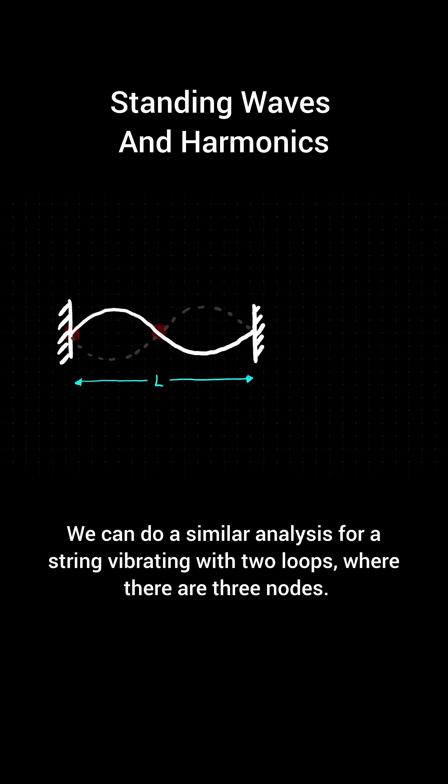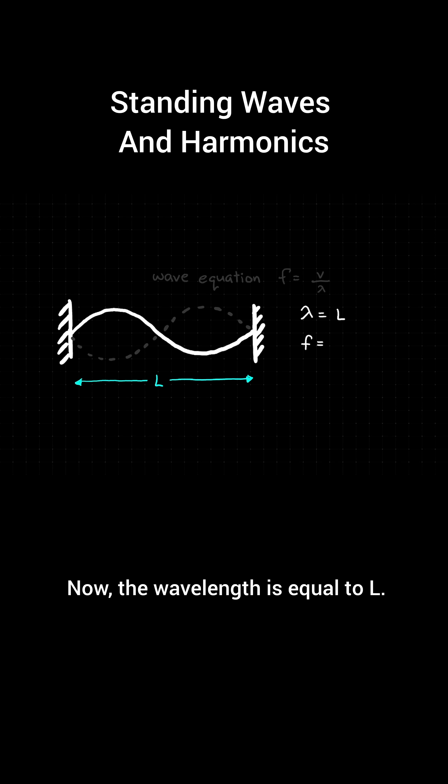We can do a similar analysis for a string vibrating with two loops, where there are three nodes. Now, the wavelength is equal to L. The frequency that causes this vibration is wave speed divided by L.